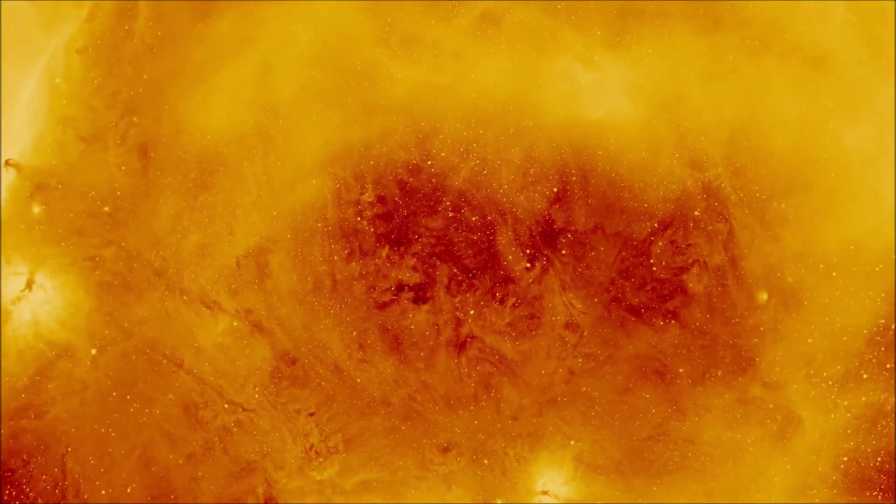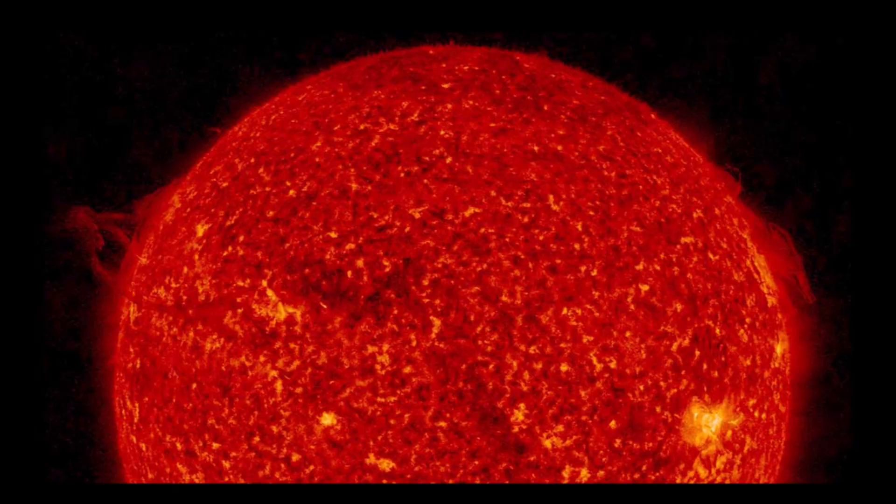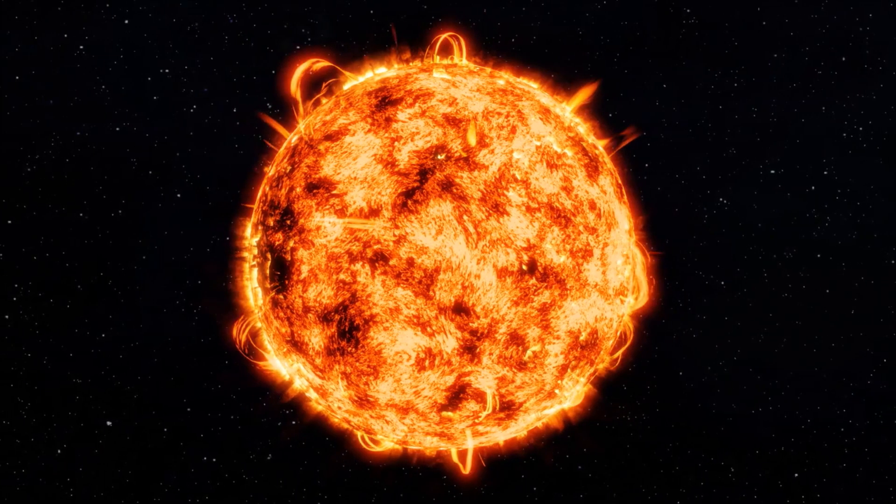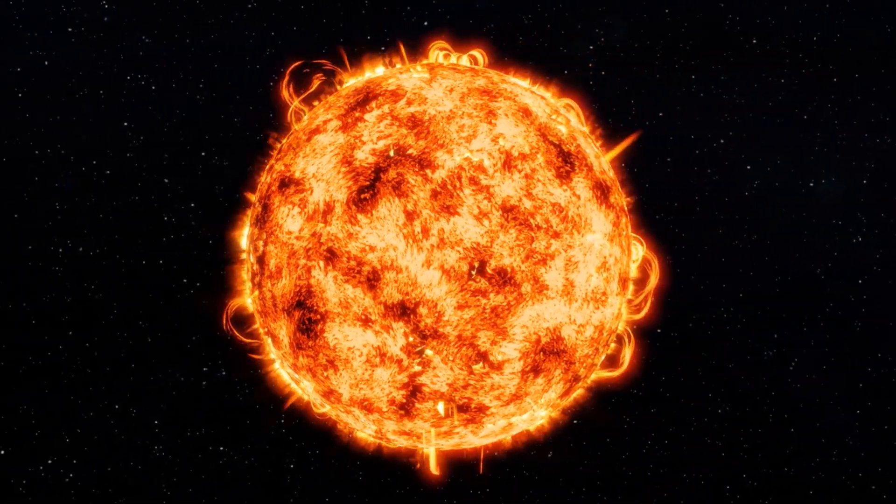The Sun is so large that over 1 million Earths could fit inside it. The Sun's surface temperature is around 5,500 degrees Celsius, 9,932 degrees Fahrenheit.